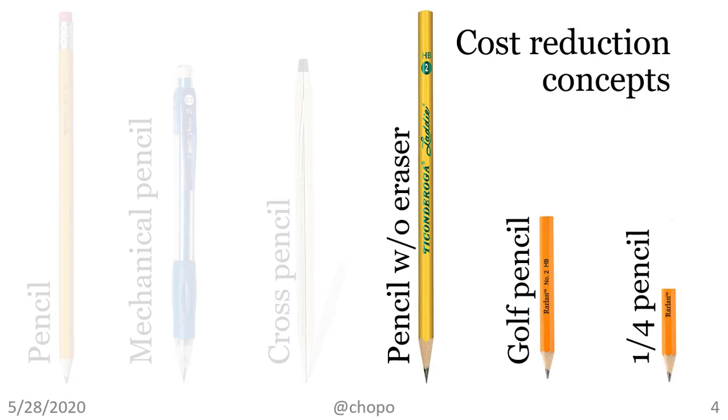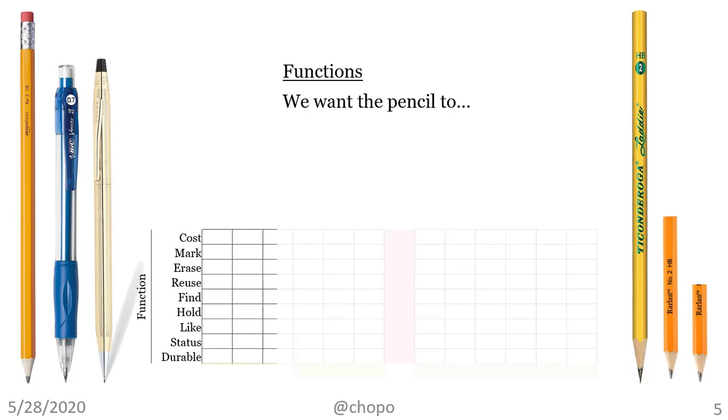This is only for learning purposes, so humor me. Pretend that after brainstorming, you figured out that you could also have other concepts that could reduce cost. Pretend that you thought about the pencil without eraser, then you have a half pencil, the kind used for keeping scores in the golf course. And you also came up with the idea that if the golf pencil exists, you want to evaluate an even shorter pencil. So, you added three new concepts seeking cost reduction.